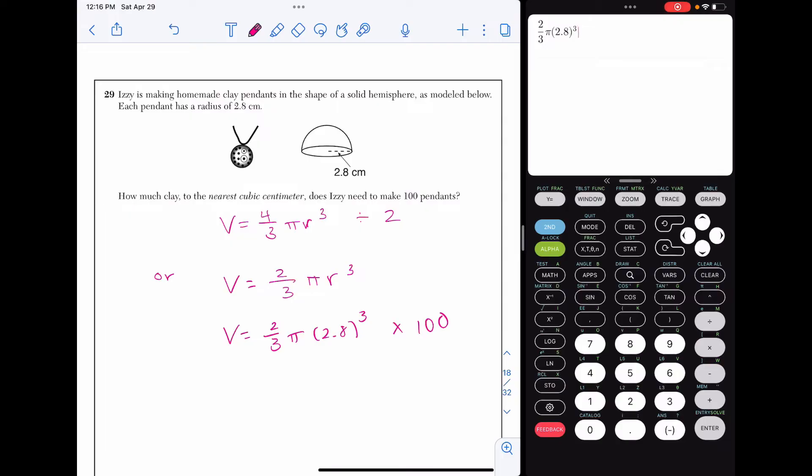I'm just going to type all of this into my calculator. So 2 thirds pi 2.8 cubed. Careful, this is a cubed. And I'm going to times that by 100. We are rounding to the nearest cubic centimeter, which means the nearest whole number. So I get 4,598 centimeters cubed as the volume of all 100 pendants.